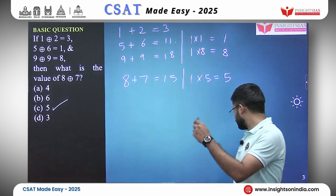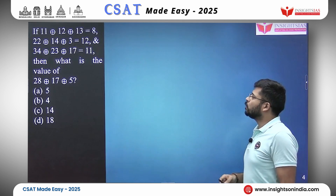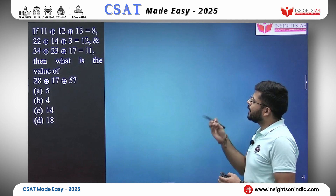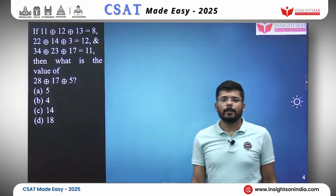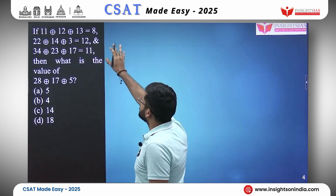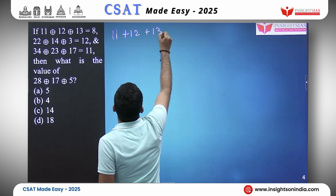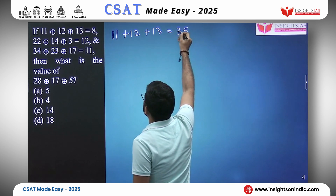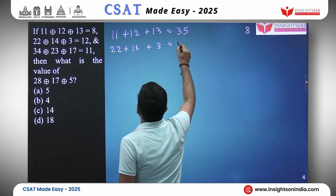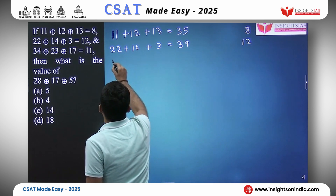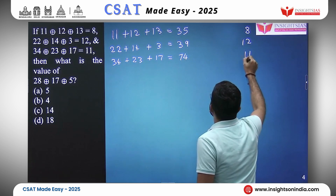Next question: if 11 circled-plus 12 circled-plus 13 equals 8, 22 circled-plus 14 circled-plus 3 equals 12, and 34 circled-plus 23 circled-plus 17 equals 11, what is the value of 28 circled-plus 17 circled-plus 5? Let us try addition: 11 plus 12 plus 13 is 35 but they have 8; 22 plus 14 plus 3 is 39 but they have 12; and 34 plus 23 plus 17 is 74 but they have 11.